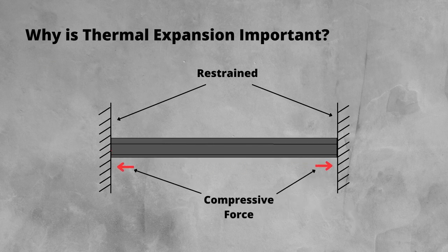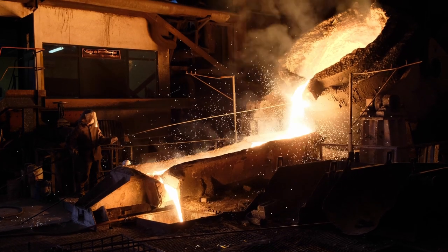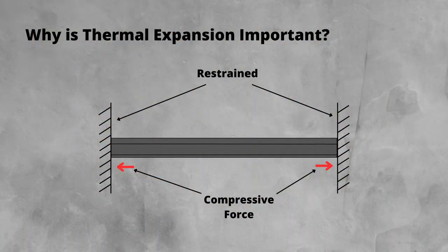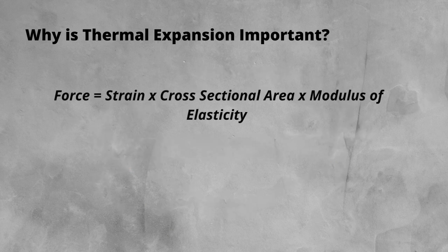The answer is the rail goes into compression, meaning the rail is squeezed into a smaller length than it naturally wants to be. This generates forces trying to get the rail to its desired length, known as compressive forces. We can work out the force in the rail using a few key pieces of information about the rail itself and the steel it's made of, as well as some material science concepts. The equation we're going to be working with is force equals strain times the cross-sectional area times the modulus of elasticity.